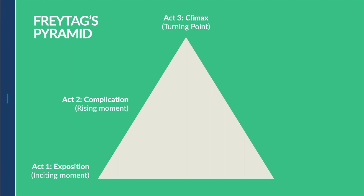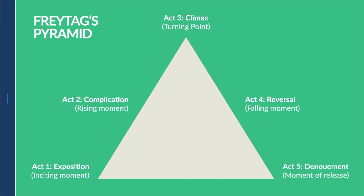Until we have the climax — the turning point where the story reaches its most tense point between the protagonist and the problem or antagonist. Then we have the reversal, or the falling action, where the protagonist takes action to start solving the problem. And finally, we have the denouement, the moment of release where the protagonist solves the problem or conflict and there is a sigh of relief from the climax.